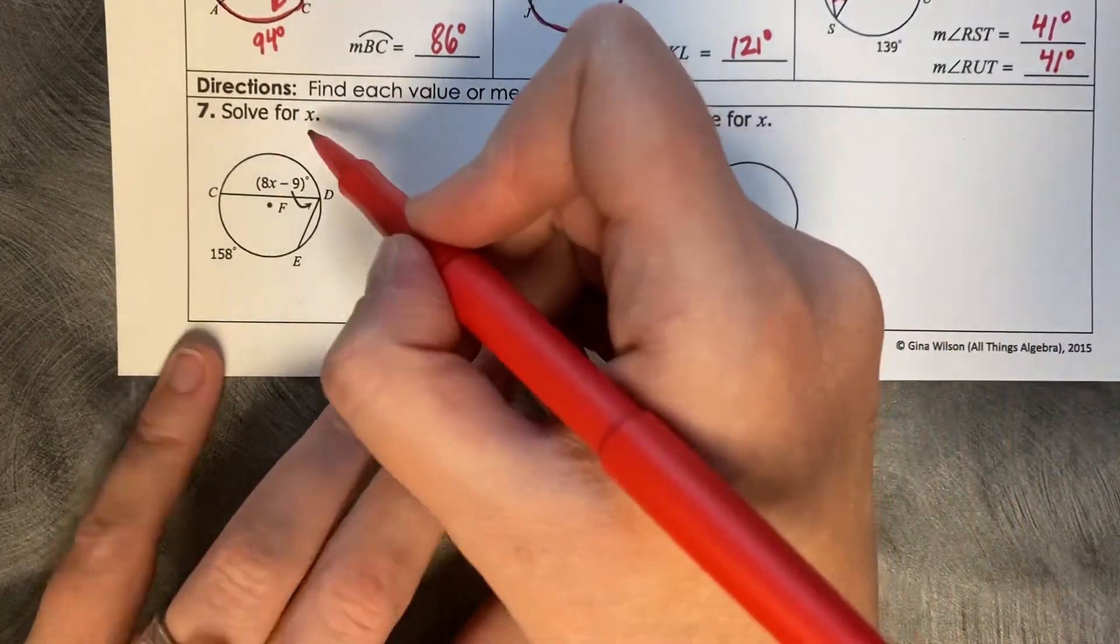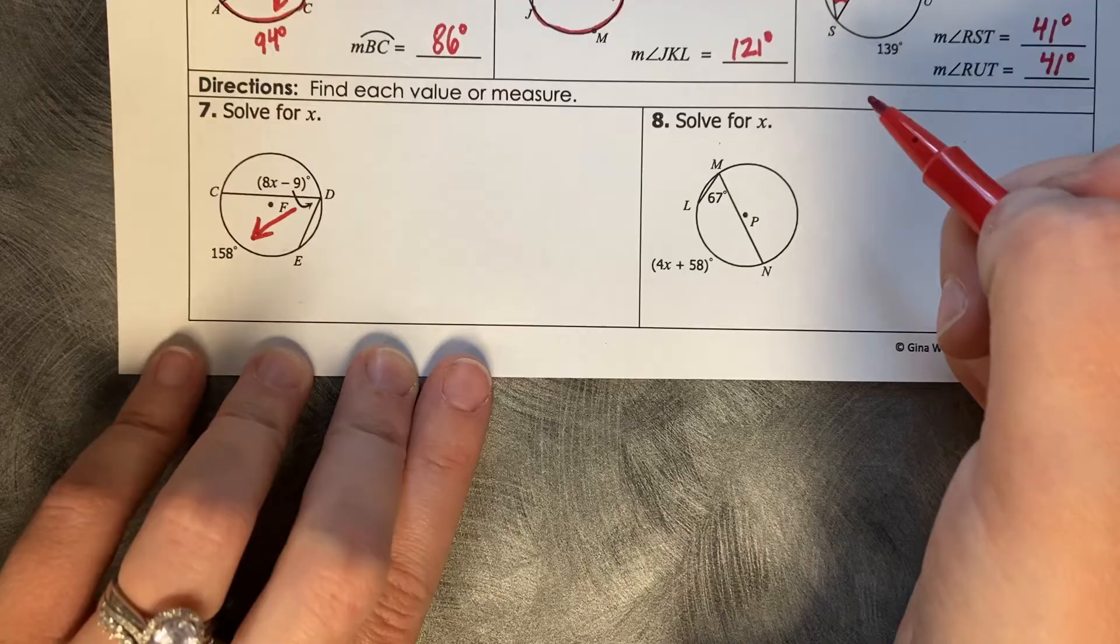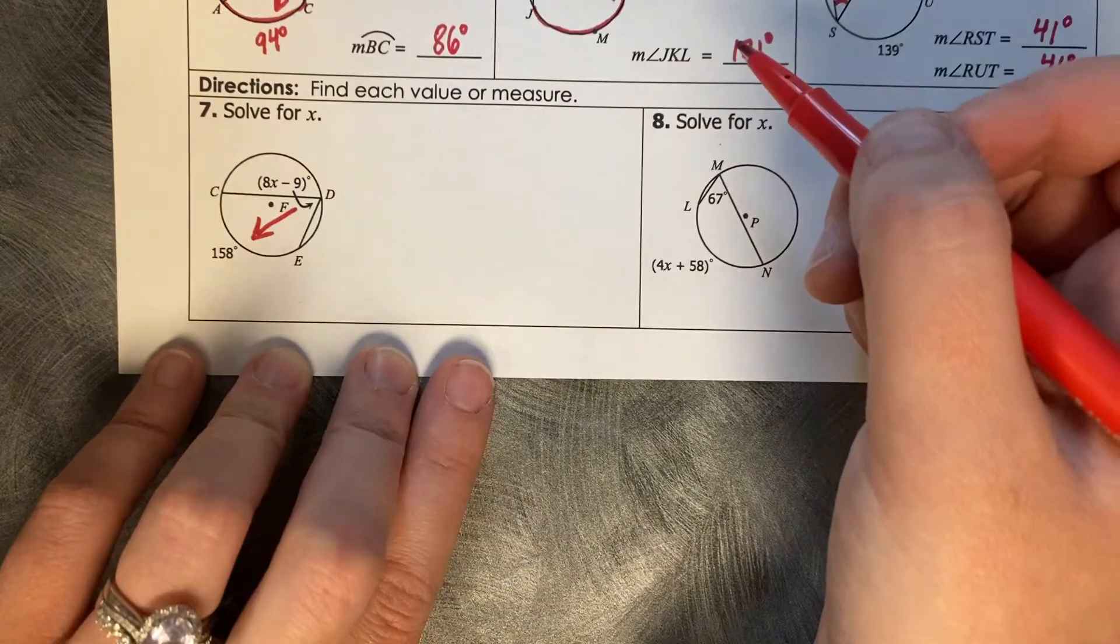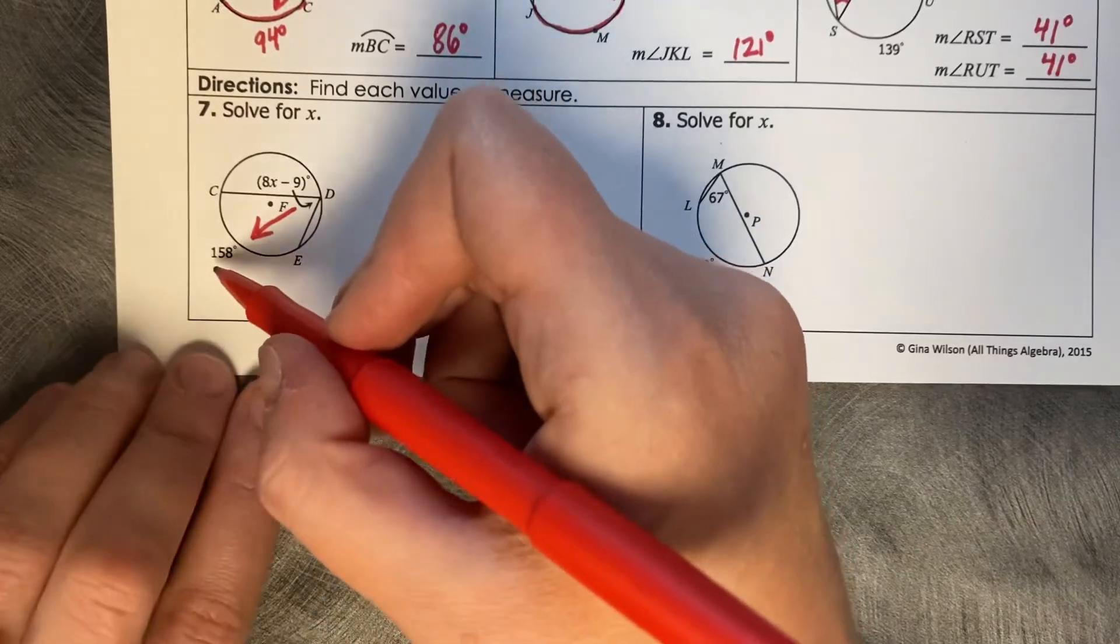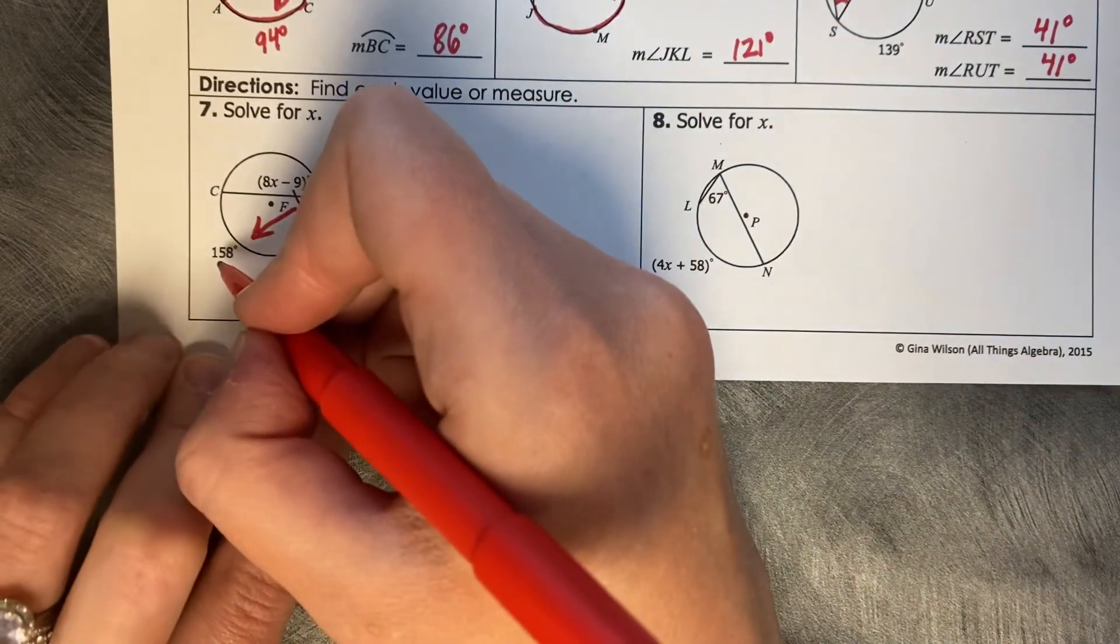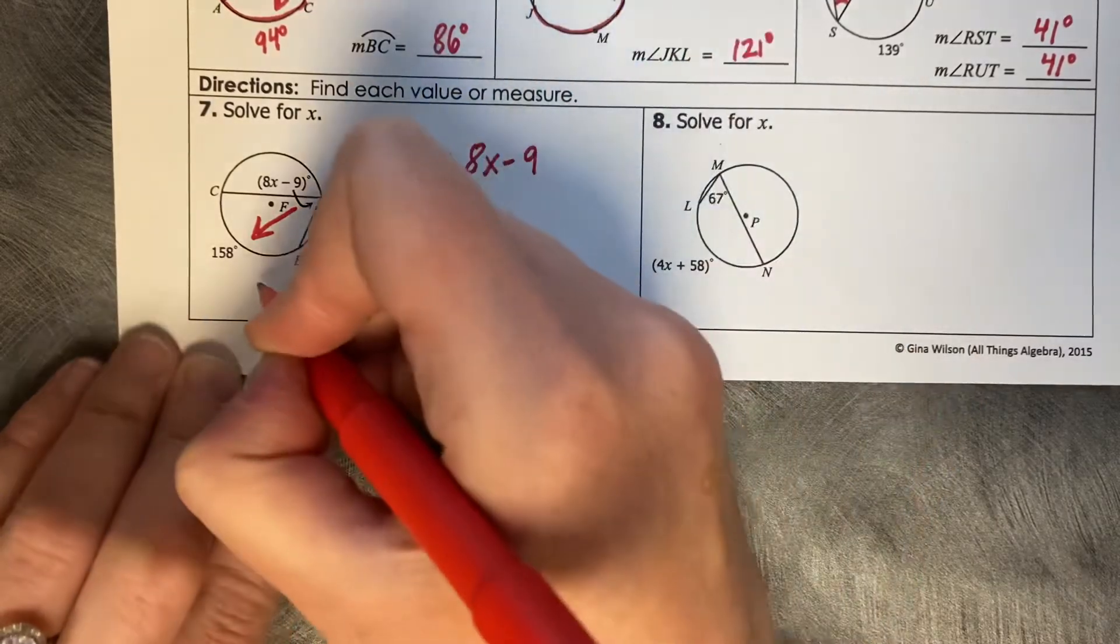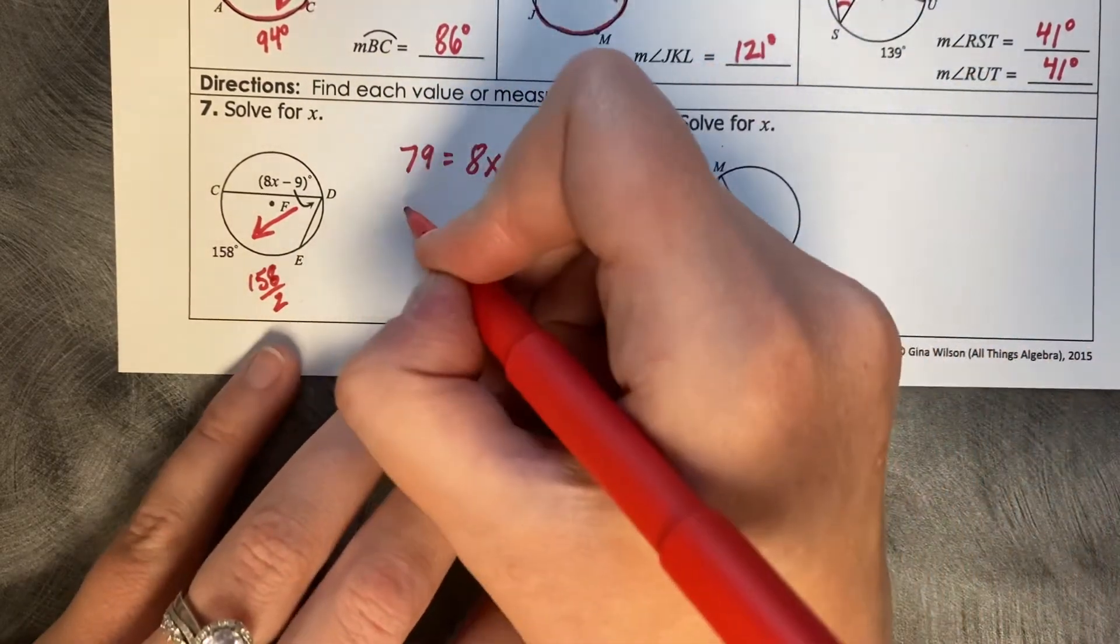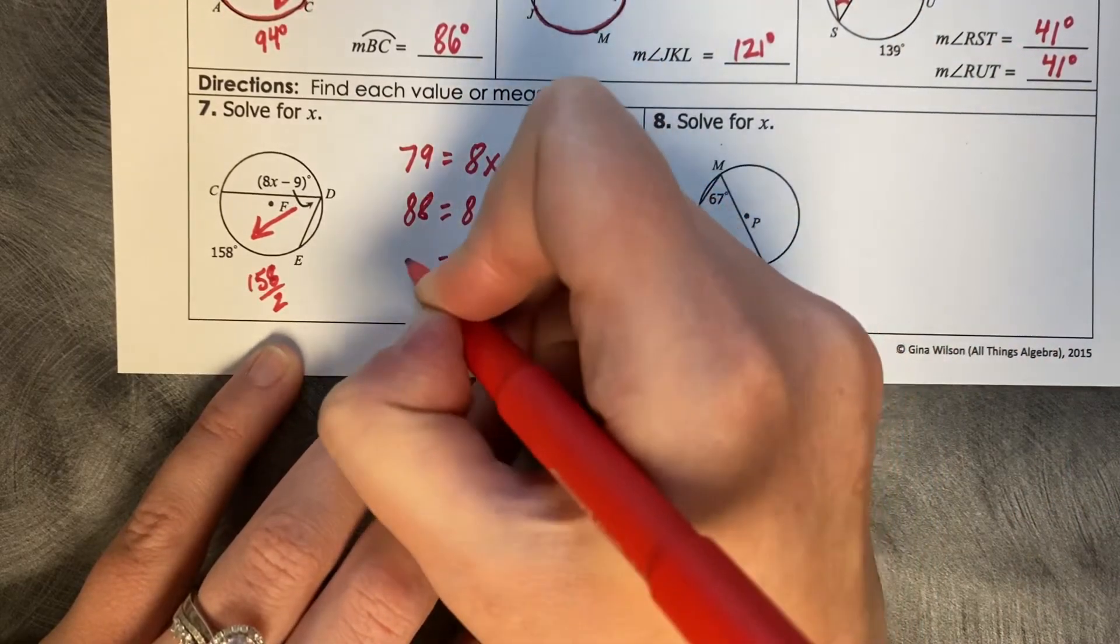Find each value or measure. Solve for X. So from our angle measure to its corresponding inscribed arc measure, it's a half or double relationship. I would say that in this case, it's easier to divide this by 2 and set it equal to your inscribed angle. So 158 divided by 2 is 79. So 79 degrees equals 8X minus 9, plus 9, that's going to be 88 equals 8X divided by 8. And X equals 11.